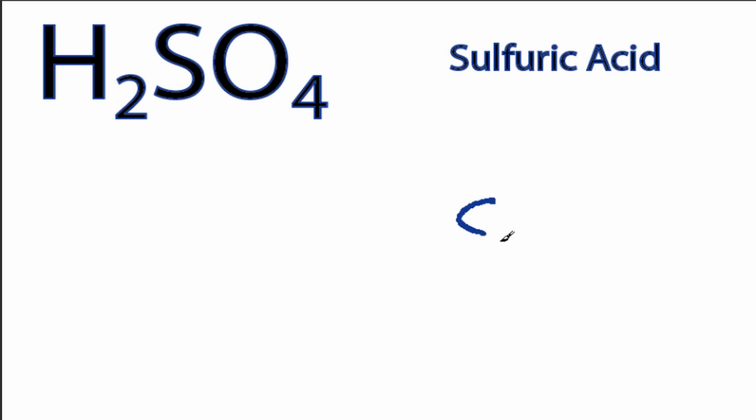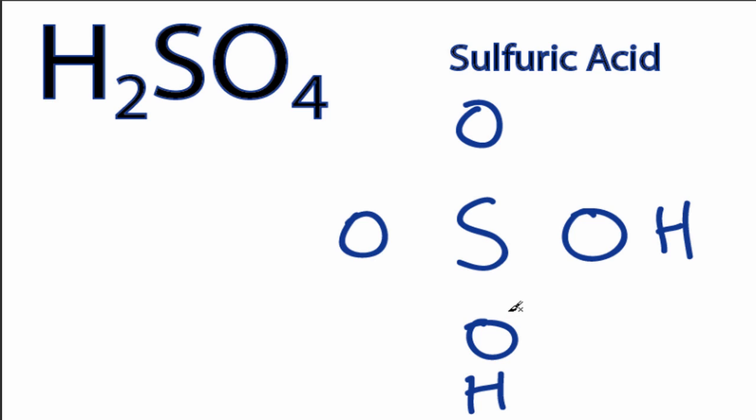So we'll put the sulfur in the center, it's the least electronegative. We have four oxygens. And then the hydrogens, as we said, they'll go on the outside of the oxygens. We have two hydrogens.